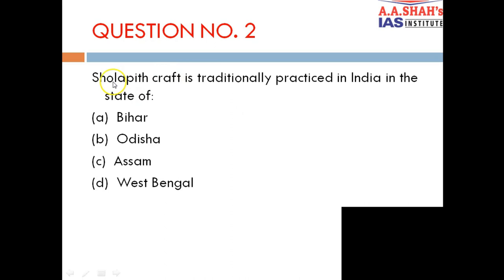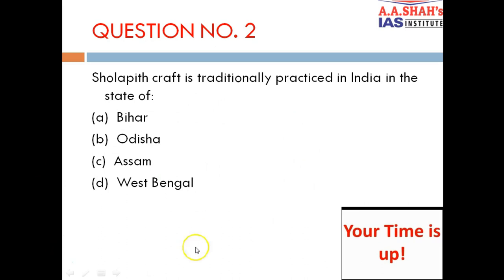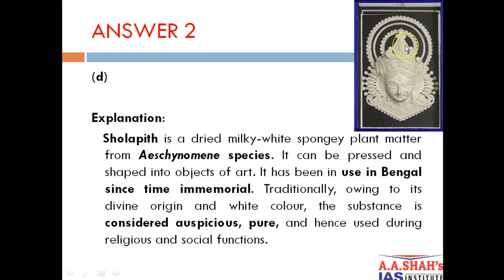Question 2: Sholapith craft is traditionally practiced in India in the state of A. Bihar, B. Orissa, C. Assam, D. West Bengal. The correct answer is D — West Bengal. Sholapith is a dried milky white spongy plant matter from Aeschynomene species. It can be pressed and shaped into objects of art and has been used in Bengal since time immemorial. It is considered of divine origin, auspicious and pure, used during religious and social functions.